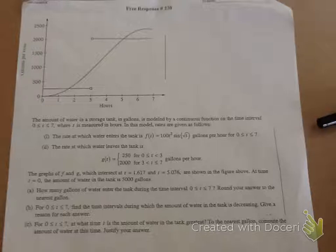The first rate is when water enters the tank: F(t) = 100t² sin(√t) gallons per hour from 0 to 7. And the second rate is when water leaves the tank: g(t) = 250 from 0 to 3, and 2000 from 3 to 7.